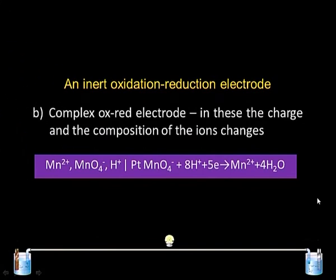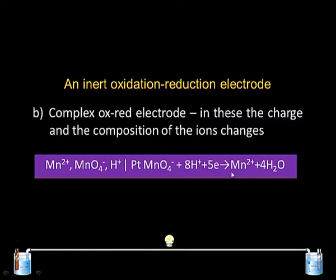The second type are complex oxidation-reduction electrodes, in which the charge and composition of the ion changes. For example, MnO₄⁻ | Pt: MnO₄⁻ + 8H⁺ + 5e⁻ → Mn²⁺ + 4H₂O. Another example is the quinhydrone electrode.